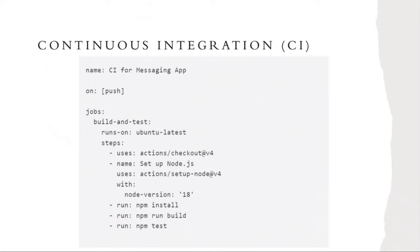The next example is a continuous integration workflow. Similar to the last, it defines the name, the event — a push — and inside jobs has a task called 'build and test'. It runs on the latest Ubuntu system, using the latest version of checkout and setup, naming the task 'setup Node.js'. Instead of version 16, it uses version 18, specified with the 'with' keyword. Extra tasks at the end include install, then run to build, and finally a test to ensure everything is working correctly.